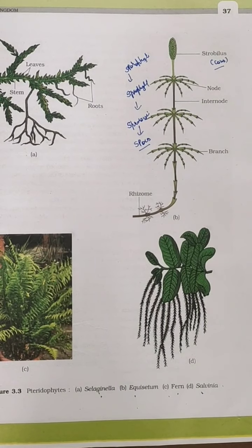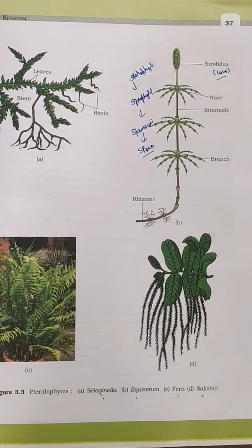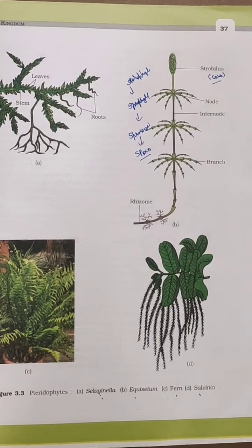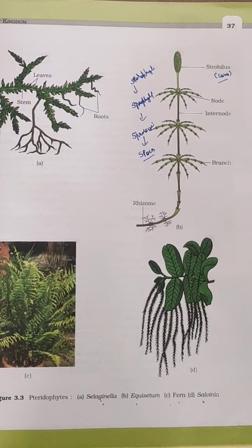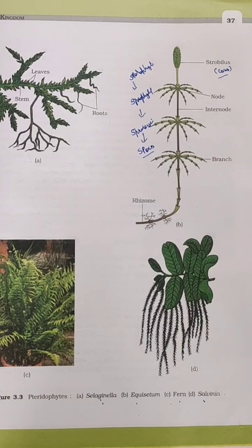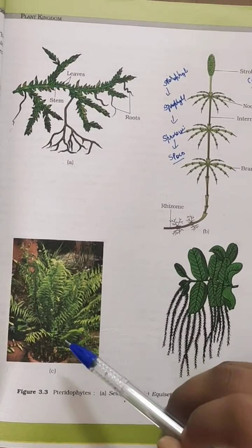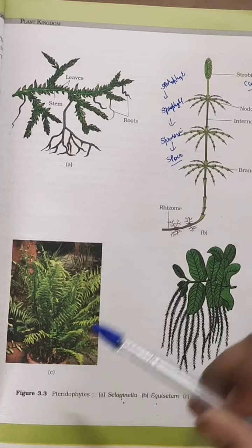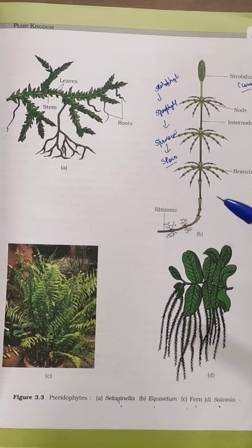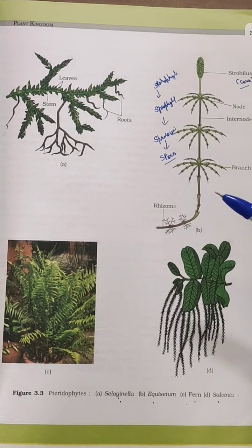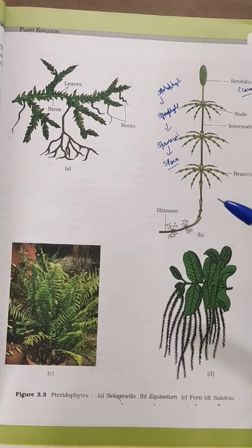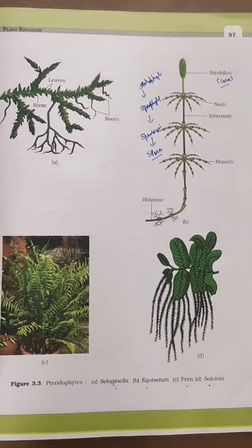When we discuss the leaves of pteridophytes, the leaves can be small or large — the size depends upon different plants. If we look at the ferns, the leaves are large, which is the beauty of the ferns and why they are kept for decoration. Whereas in plants like Selaginella, they have very small leaves. So the size of the leaf can vary in pteridophytes.